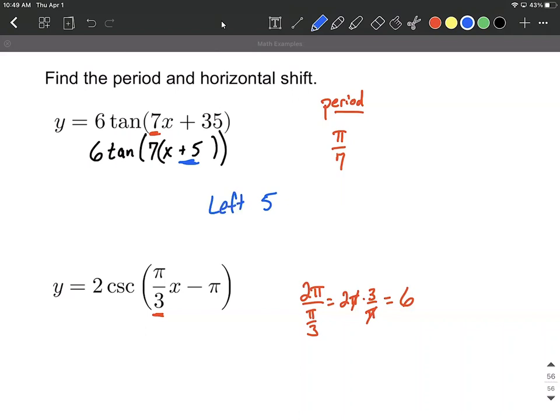All right, on the bottom one, it looks a little bit more complicated because we have that fraction going on. So this would be 2 times the cosecant. Factoring out that pi over 3 is going to result in x here, but then we have to think to ourselves, pi over 3 multiplied by what is going to give us simply pi.